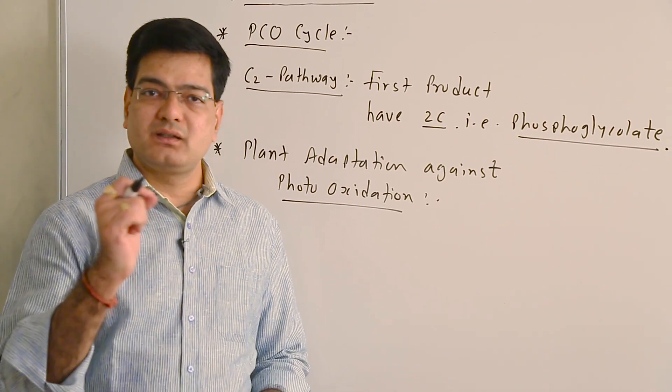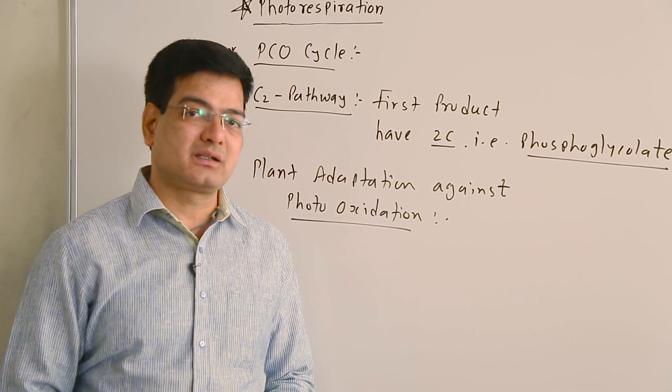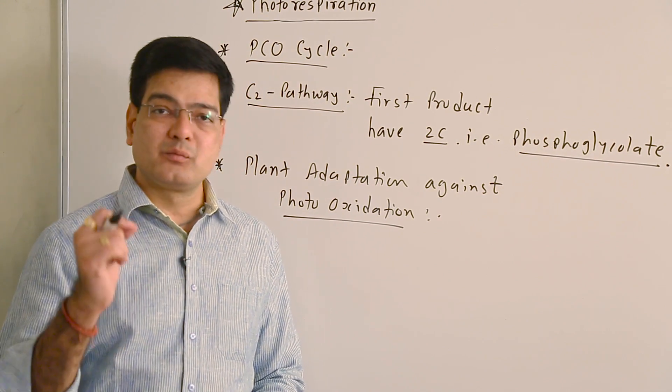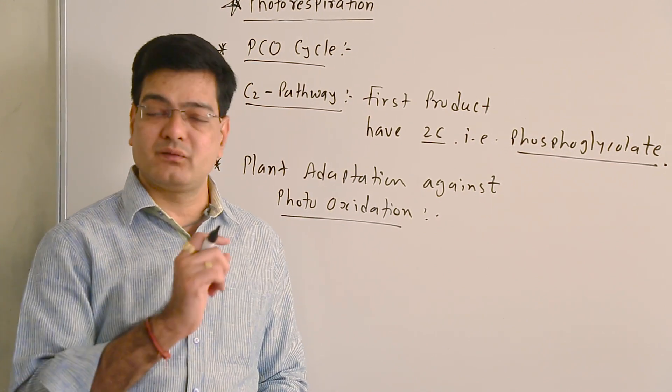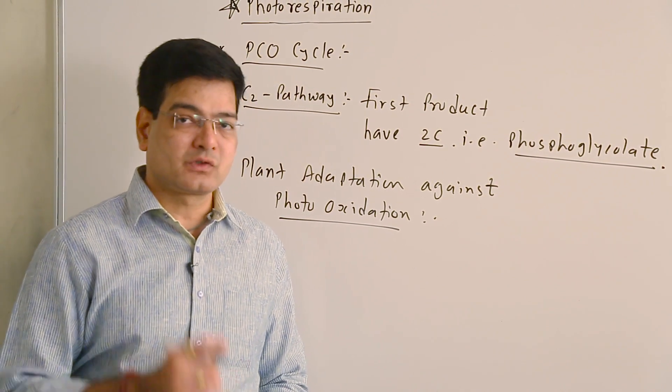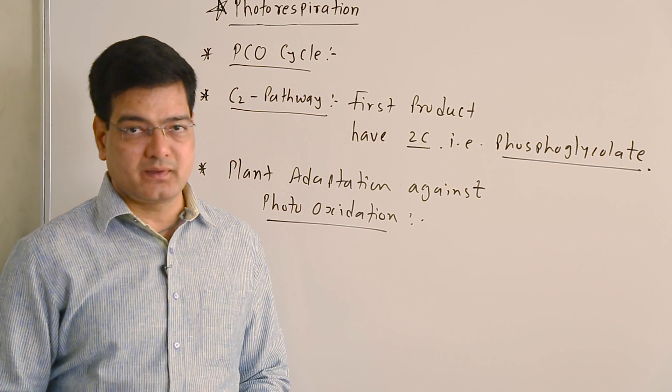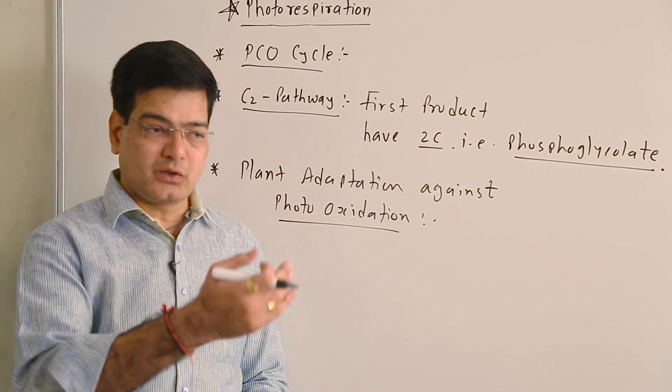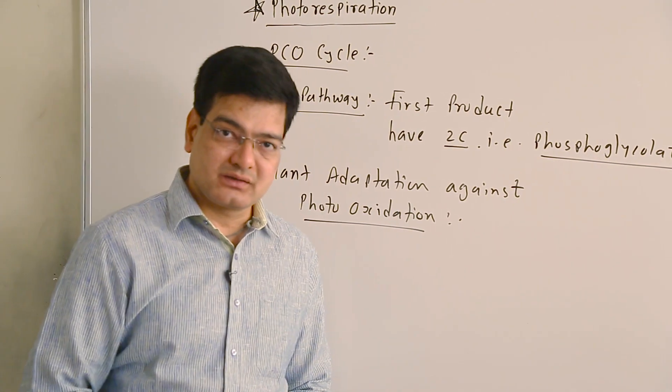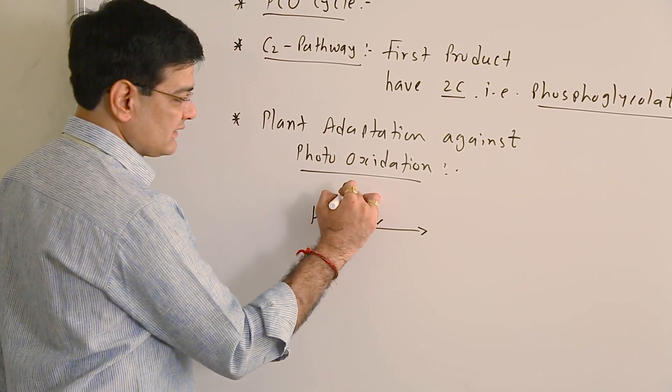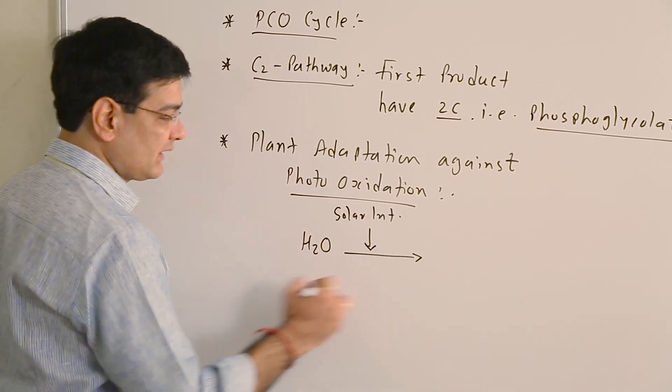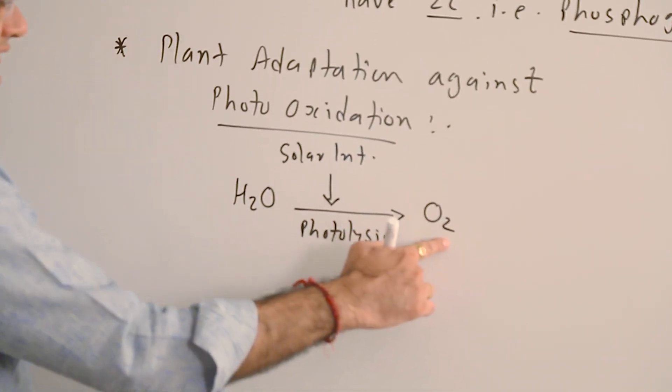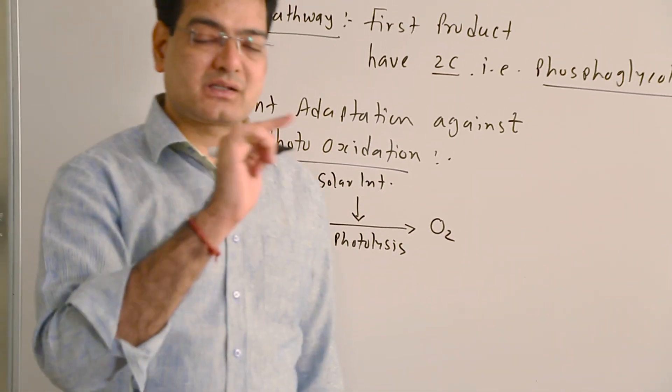Photorespiration is a process in which at high light intensity chlorophyll molecules are oxidized and decomposed. In such cases plants lose the ability of photosynthesis forever as there is no chlorophyll remaining. So to prevent this oxidation of chlorophyll, which is called photo-oxidation, plants utilize water to protect against sunlight. As a result, photolysis of water is carried out and more oxygen is synthesized in the chloroplasts.